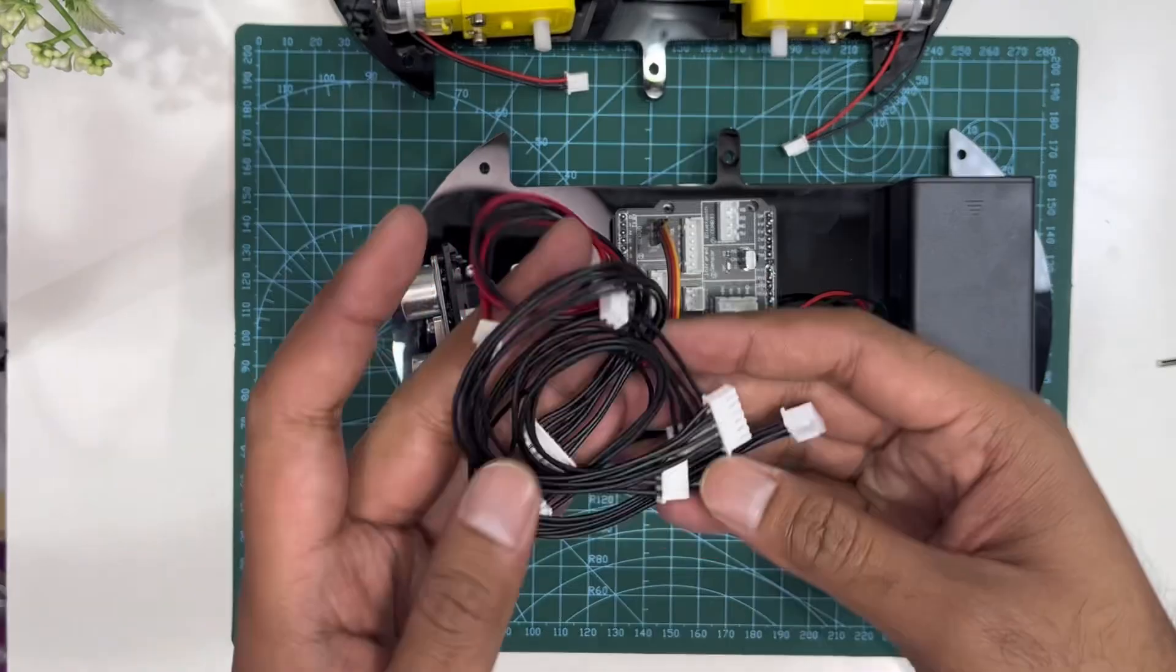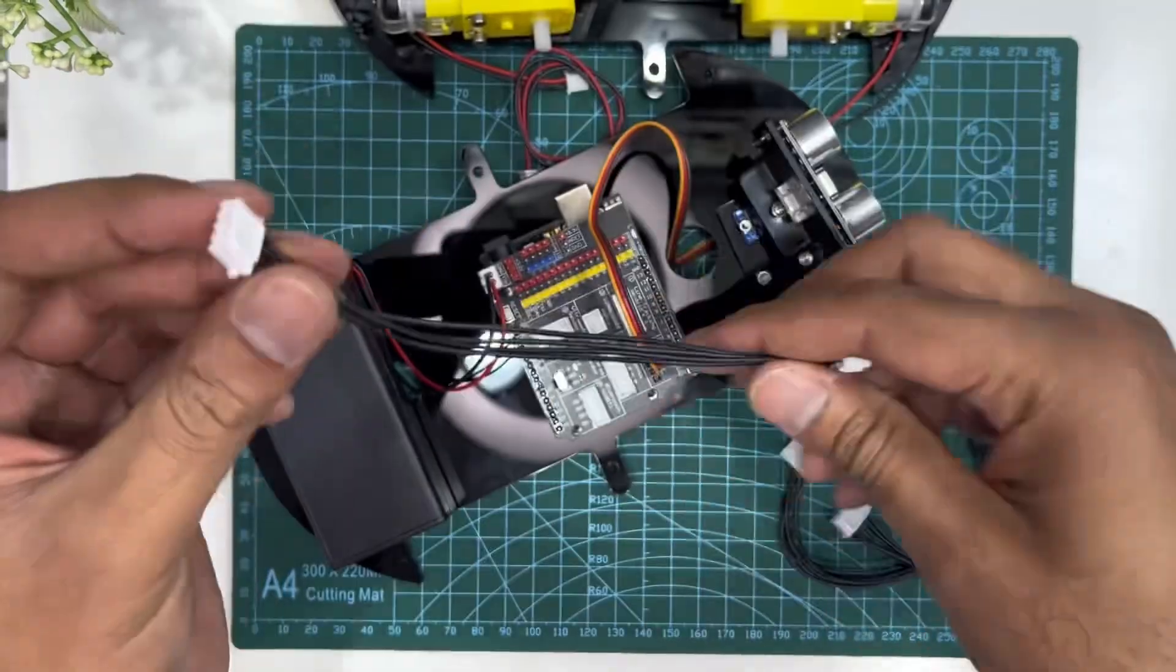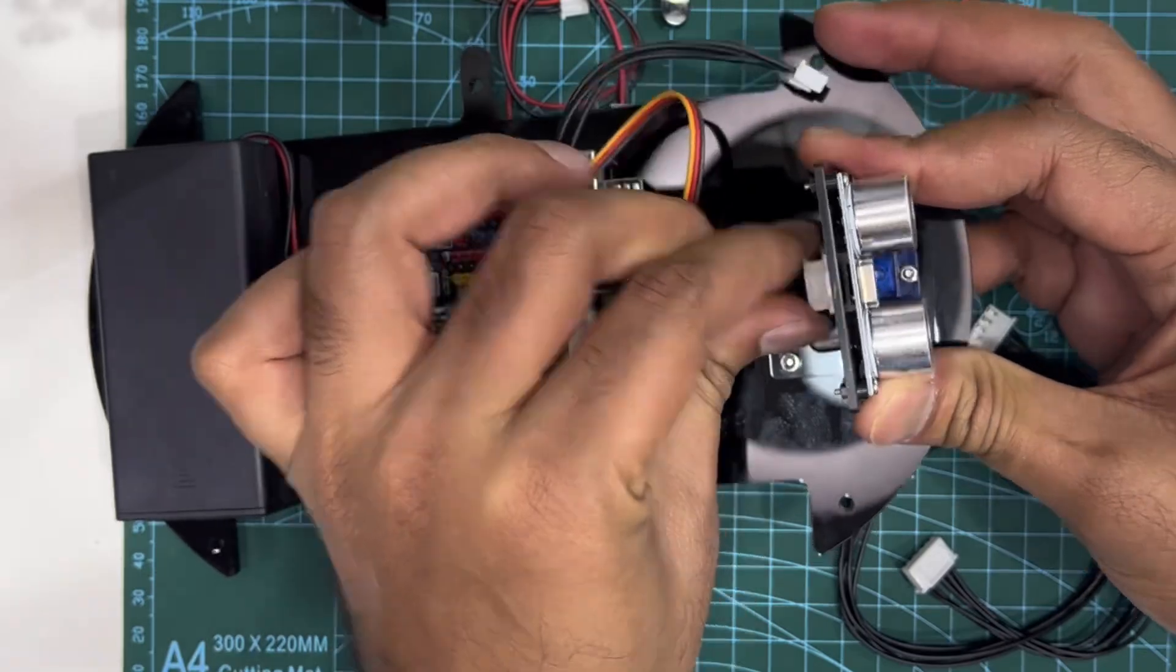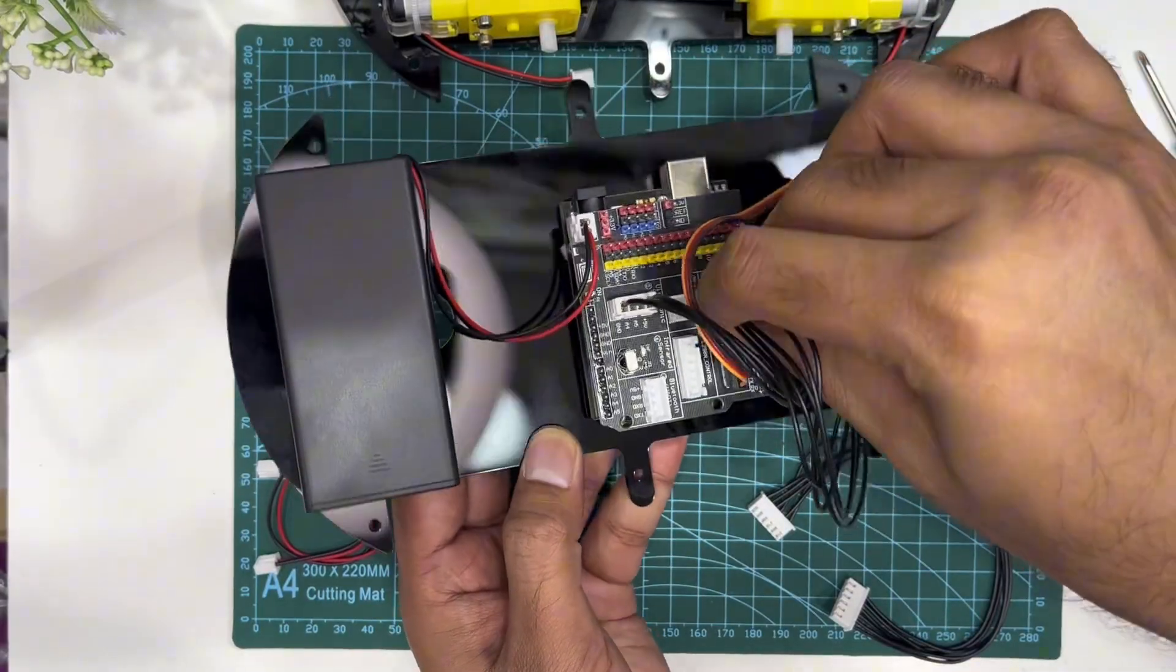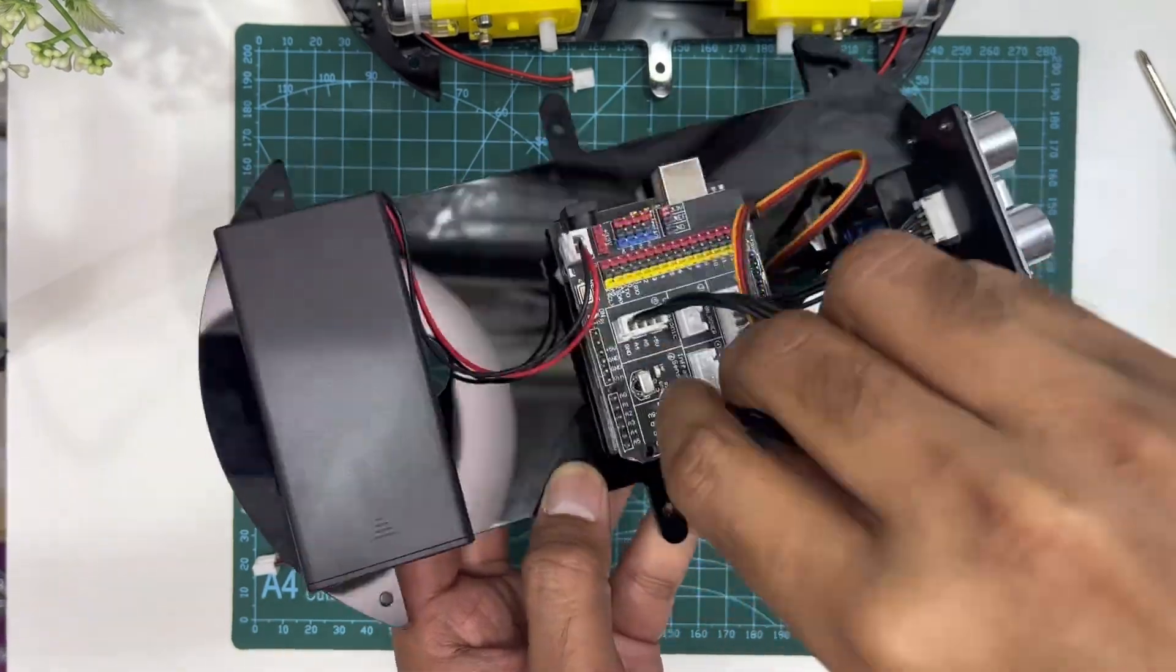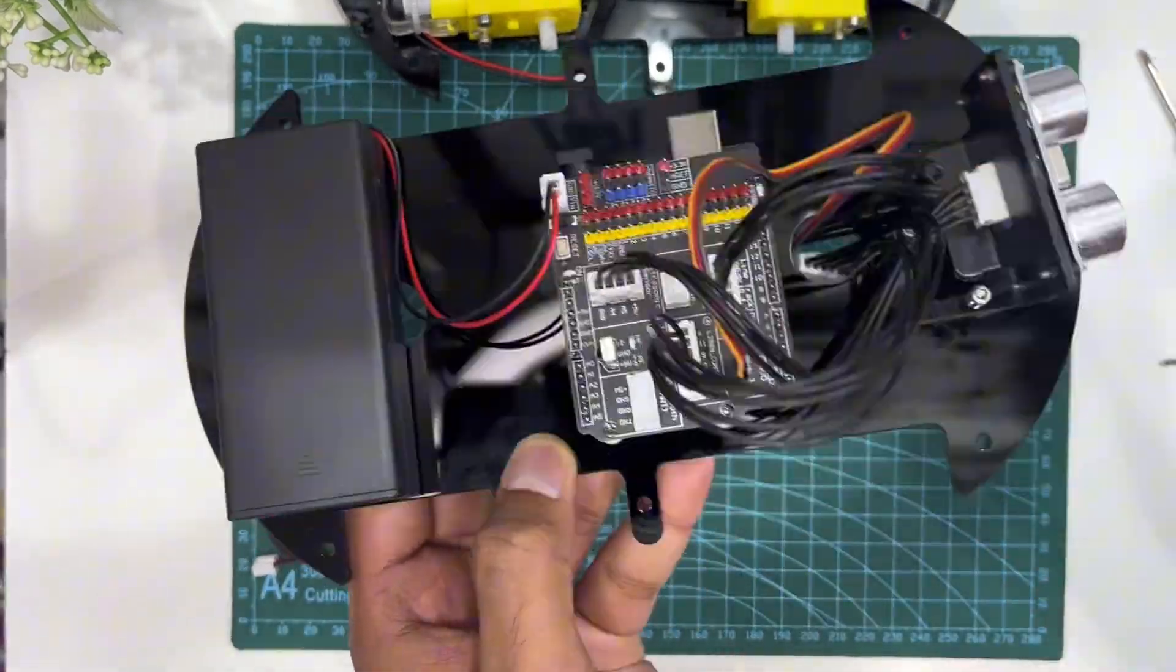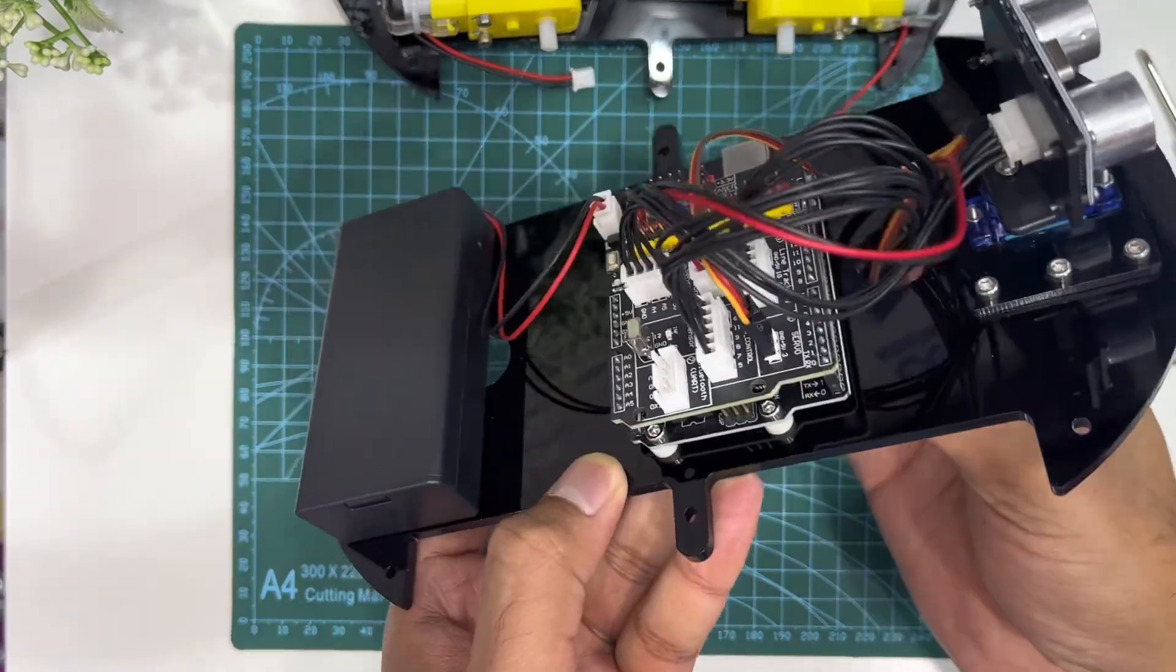Now time to connect everything we have. Connect ultrasonic sensor 4-pin cable. Some cables need to go through this hole in the chassis for clean cable management.